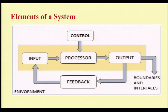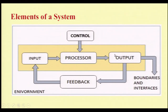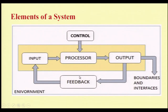Let us see the elements of a system. The diagram shows input, processor, output, and control. You give the input, it gets processed, and you get the exact output based on the input given. This processor is controlled by the controller. If the output is correct, you get feedback from the customer. Feedback is of two types: positive feedback, which says the system works in a very good manner, and negative feedback, which says the system has some defects or flaws.